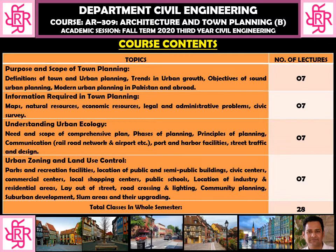For example, maps. The first and foremost important thing in town planning is the making of maps — how the city is mapped. So mapping techniques are important to understand, and that is the first information we require in town planning. Then we must know the natural resources that exist in any city or town, or in a natural area where we are going to make a new town. We also look at the economic resources, and planning considers both natural and economic resources.